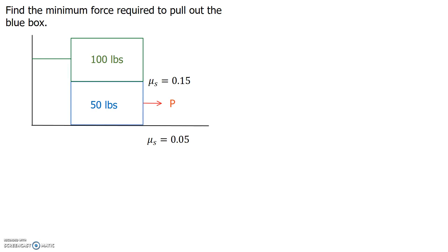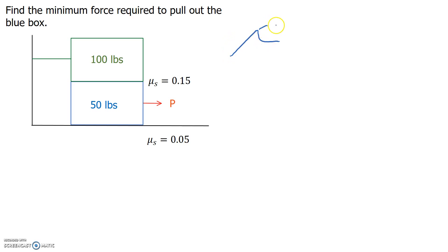The next type of problem is an impending motion problem. Impending motion, if you remember, was the point on our graph when we reached the maximum friction and then dropped off to kinetic friction. This is the maximum force we can apply before motion occurs. Here it says find the minimum force required to pull the blue box — this is an impending motion problem. At impending motion, friction is equal to mu static times the normal force.